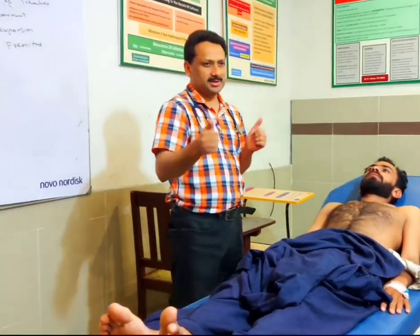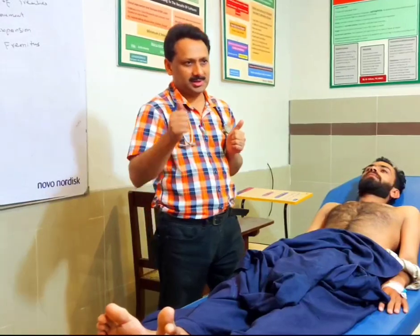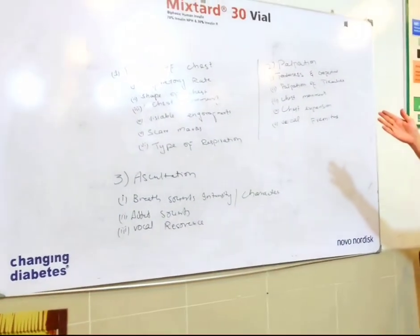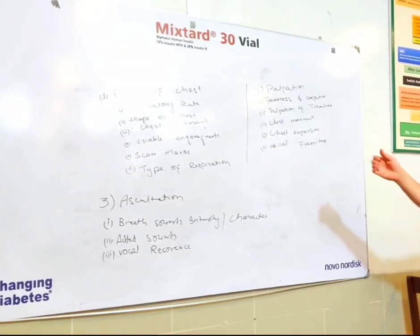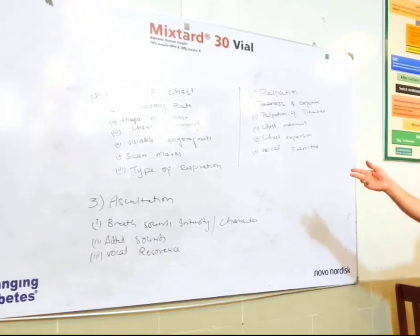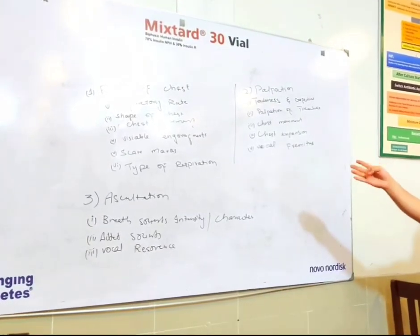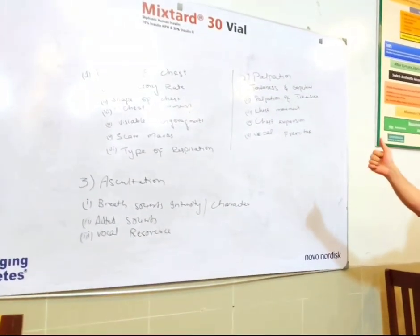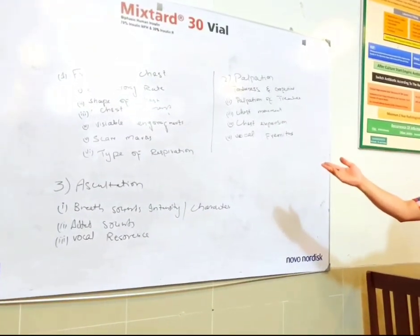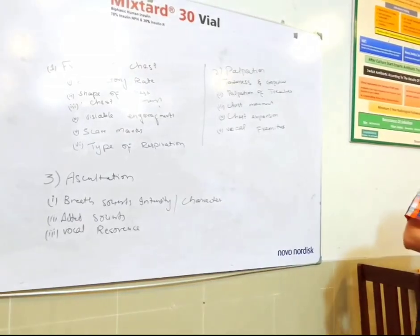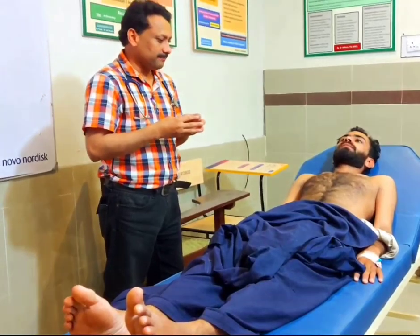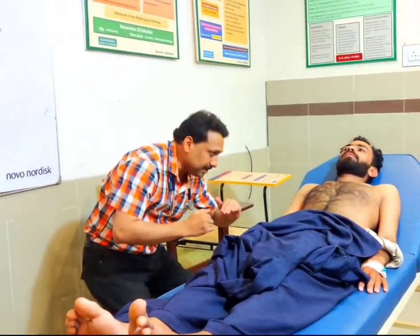We start with inspection. Examination by inspection includes six points: first is respiratory rate, second is type of respiration, third is shape of chest, fourth is chest movement, fifth is visible engorged veins — and occasionally you can see pulsations as well — and sixth is scar marks.